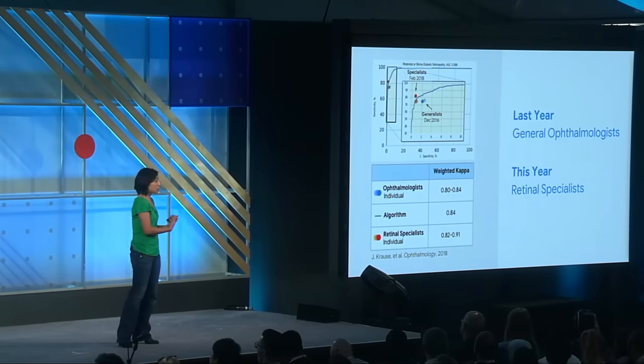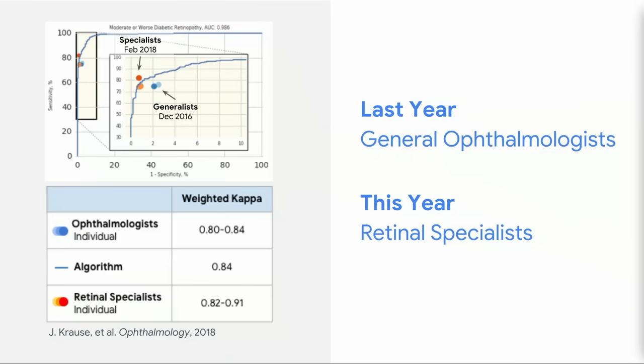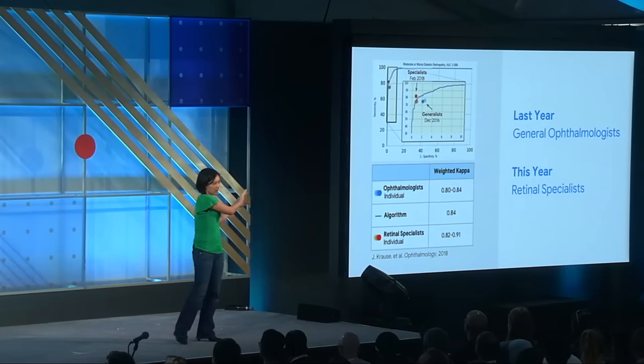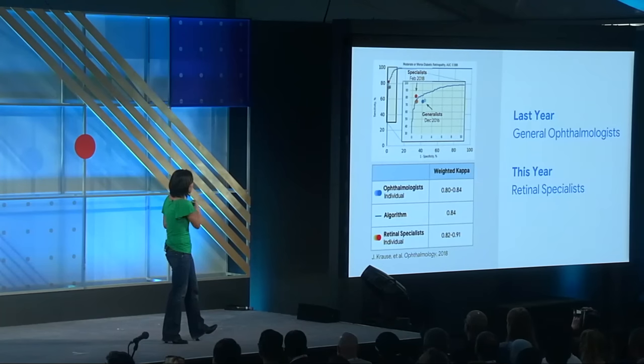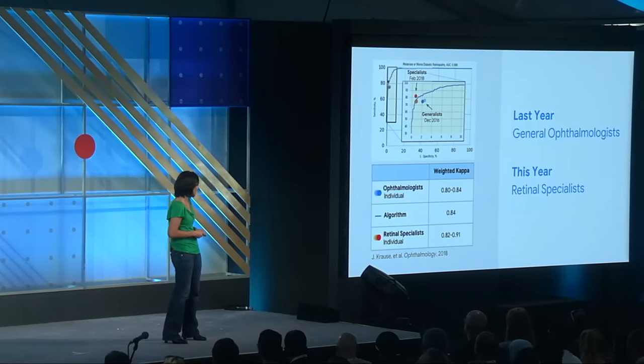Since then we've improved the model. Around December 2016 we were on par with generalists. This year we published a new paper where we used retina specialists to grade the images, and we also had them argue when they disagreed about the diagnosis. When we trained the model using that as a ground truth, the model predicted quite well. So this year we're on par with the retina specialists. The weighted kappa — which is just agreement on the five-class level — shows that we're essentially in between the ophthalmologists and the retina specialists, kind of in between the retina specialists.